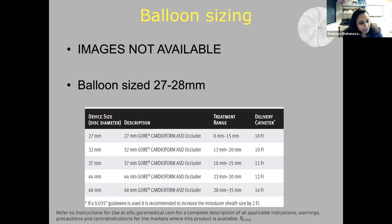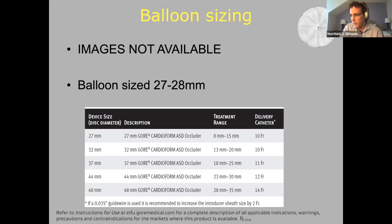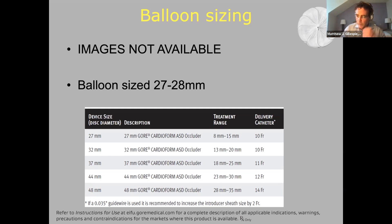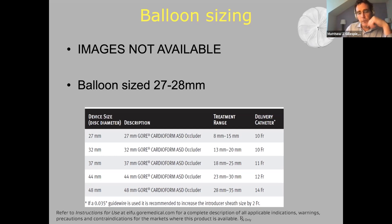Now the aortic rim was a little on the deficient side — does that sway you one way or the other in terms of device choice? The more deficient the rim is, the more I tend to try to use the bigger device if I can. But in this particular patient, the total septal length was a little bit short, so I thought the 48 might be oversized, and I said let me try with the 44 millimeter device.